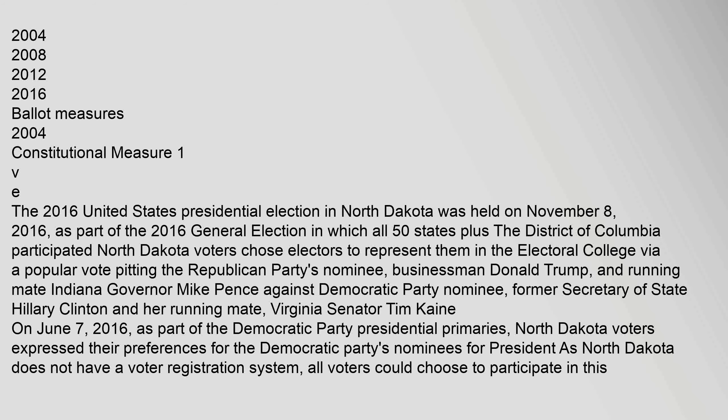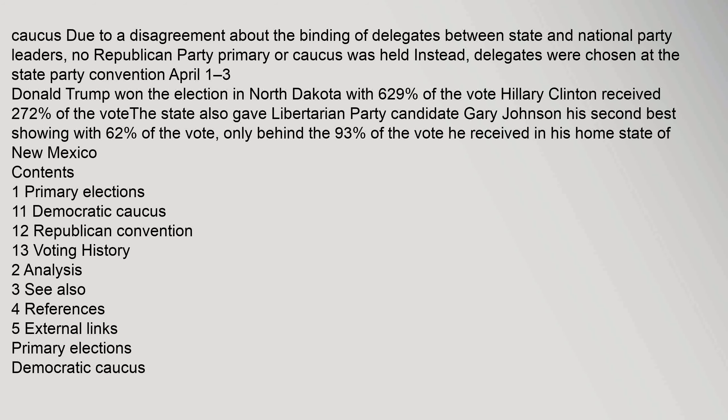On June 7, 2016, as part of the Democratic Party presidential primaries, North Dakota voters expressed their preferences for the Democratic Party's nominees for president. As North Dakota does not have a voter registration system, all voters could choose to participate in this caucus. Due to a disagreement about the binding of delegates between state and national party leaders, no Republican Party primary or caucus was held. Instead, delegates were chosen at the state party convention April 1–3. Donald Trump won the election in North Dakota with 62.9 percent of the vote; Hillary Clinton received 27.2 percent of the vote. The state also gave Libertarian Party candidate Gary Johnson his second best showing with 6.2 percent of the vote.